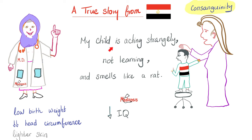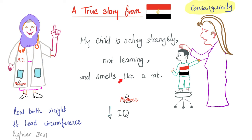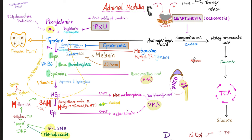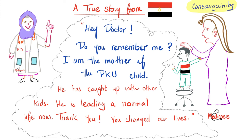Let's talk about phenylketonuria. A child is acting strangely, not learning, smells like a rat, has low birth weight, low head circumference, a lighter skin tone - and the parents are consanguineous. This is phenylketonuria - a deficiency in the enzyme phenylalanine hydroxylase. Normally, this enzyme converts phenylalanine into tyrosine. In PKU, phenylalanine hydroxylase is absent, so phenylalanine accumulates and tyrosine becomes very low. Treatment: a special diet rich in tyrosine and poor in phenylalanine - trying to reverse the symptoms.